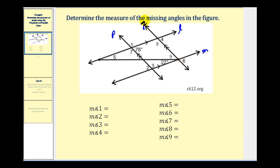Let's go through this diagram and see which angles we can determine most easily. Notice that angle four and the angle marked seventy-eight degrees are corresponding angles. We know corresponding angles are congruent when we have two parallel lines cut by a transversal, so angle four is seventy-eight degrees.